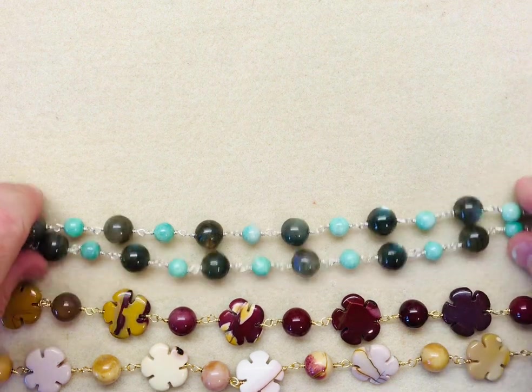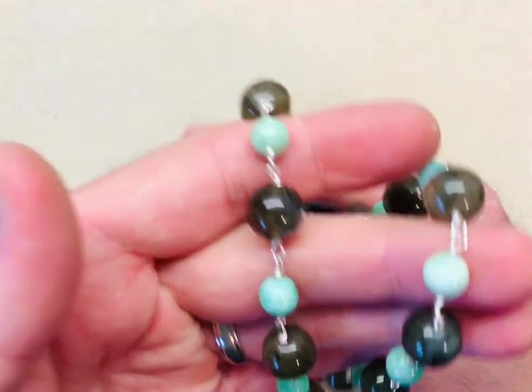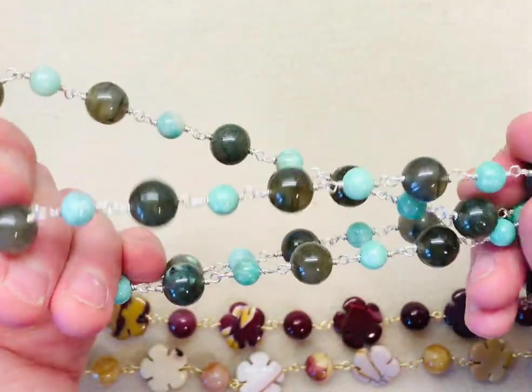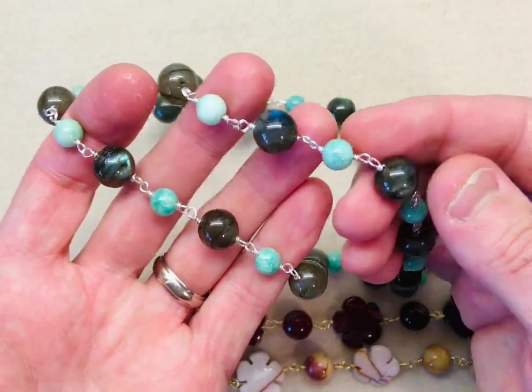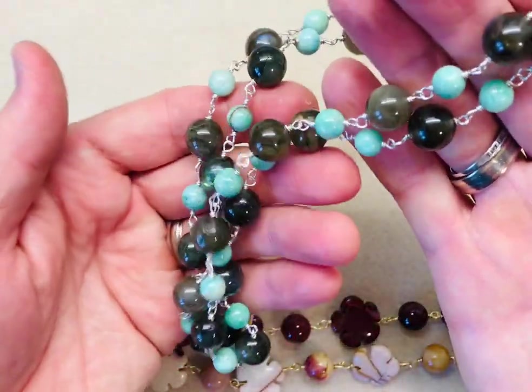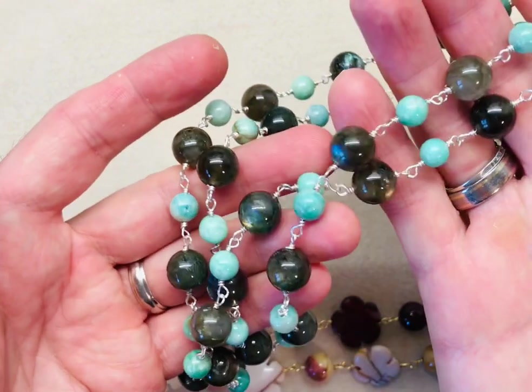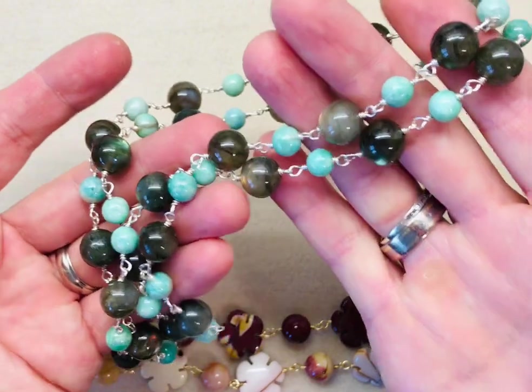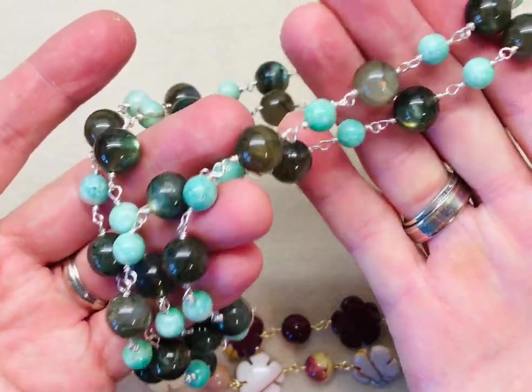This next piece which is Amazonite and Labradorite is a 360 necklace, so it's a continuous loop of rosary linking. I've used 0.6 millimeter gauge wire to make the links and this is long enough to be placed straight over the head without having a clasp. So if you are making it for somebody with dexterity problems or who live on their own and find it difficult to pop on a clasp, this is a really nice technique, the 360 degree loop just to place over the head.